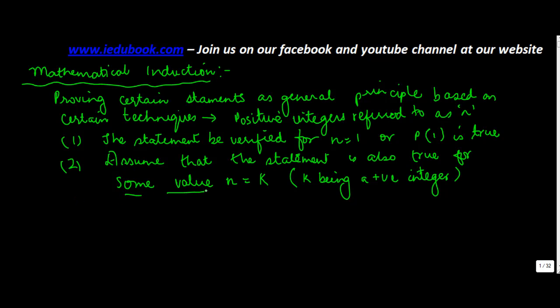Third, try and prove that the statement is also true for k plus one. So what happens is that once you prove that the statement is true for k plus one, if k is a positive integer and the statement is also true for k plus one, then generally the statement will be true for all the positive integers.